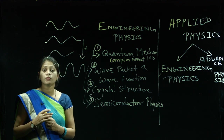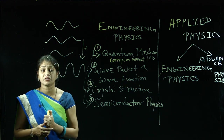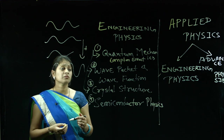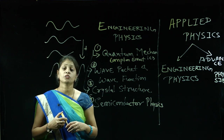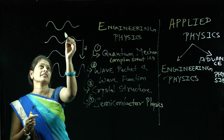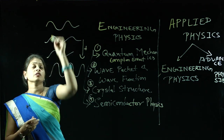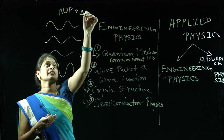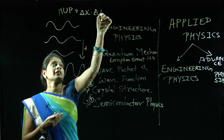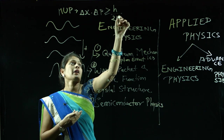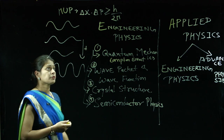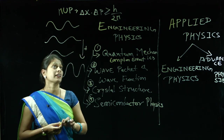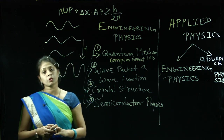Afterwards, the next thing is the Heisenberg Uncertainty Principle. Heisenberg Uncertainty Principle is very important because if a particle has wave nature, what about its wavelength, momentum, energy, and position? Heisenberg Uncertainty Principle, abbreviated as HUP, is given by: Δx · Δp ≥ h / 2π. This tells us that if you know the momentum, you can determine the position, and if you know the position, you can determine the momentum. The proof of HUP is also included in this unit.